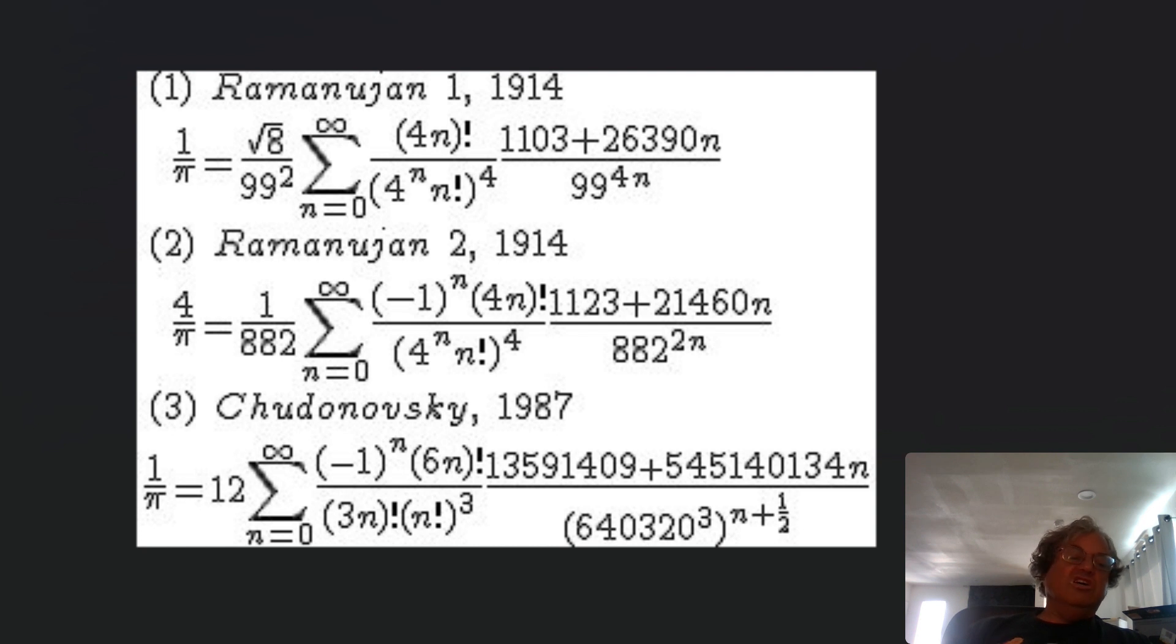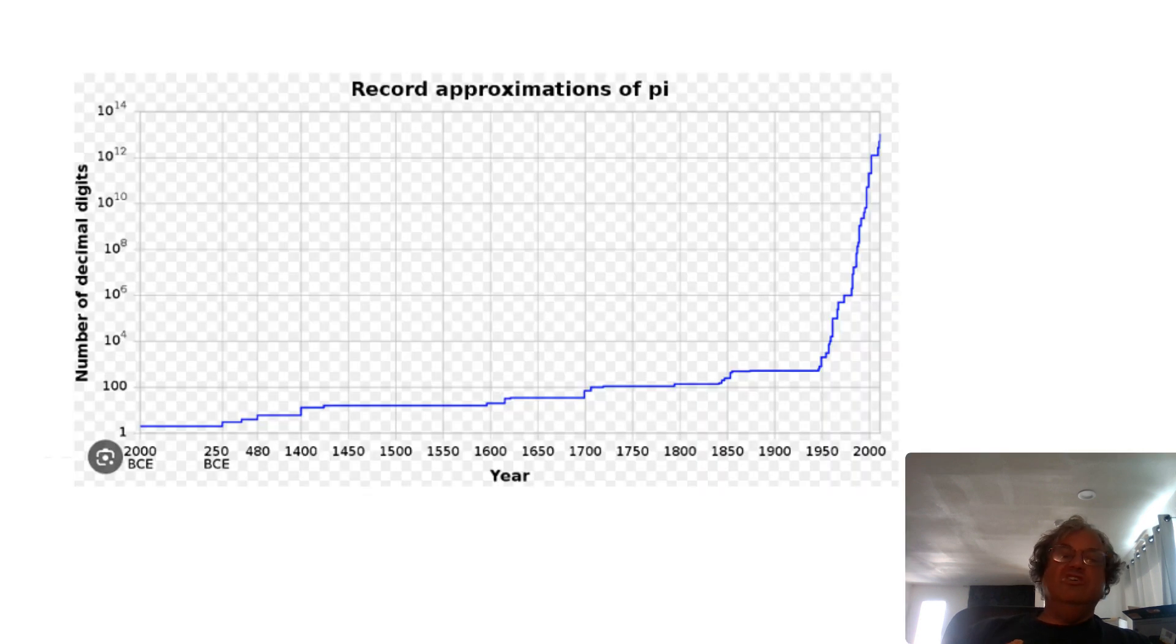I forgot to tell you how many digits are currently known. About 10 to the 13th digits. That's 10 to the 12th is a trillion. This is like 2005. This isn't even updated. I think if you went until today, I think it is now known to 100 trillion digits.